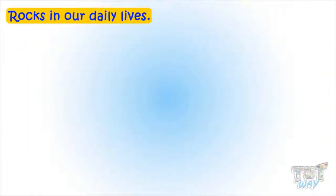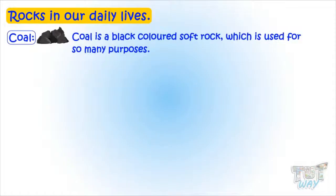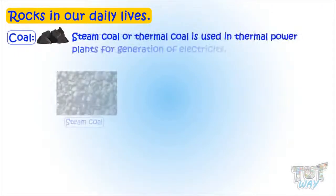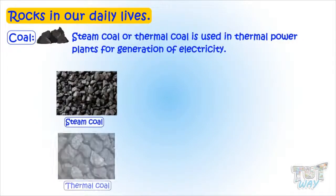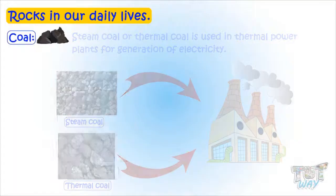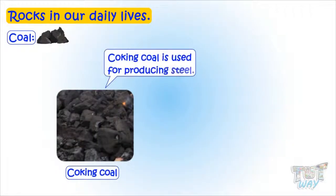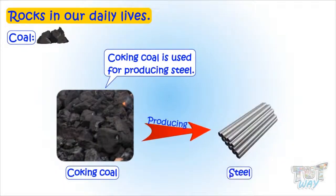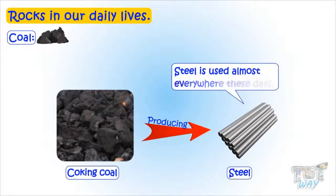Coal is a black colored soft rock which is used for so many purposes. Steam coal or thermal coal is used in thermal power plants for generation of electricity. Cooking coal is used for producing steel, and steel is used almost everywhere these days.